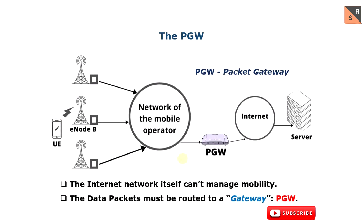The internet network itself cannot manage mobility. Each packet is intended for an address, and an address is generally linked to a physical location.